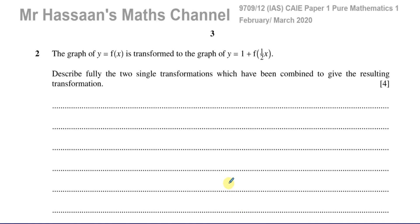Welcome back, this is Mr. Hassan's Maths Channel, and I'm now on question number 2 from the February-March 2020 International A-Level paper from Cambridge. This is paper 1, which is the Pure Mathematics P1, 9709, paper 1, variant 2.